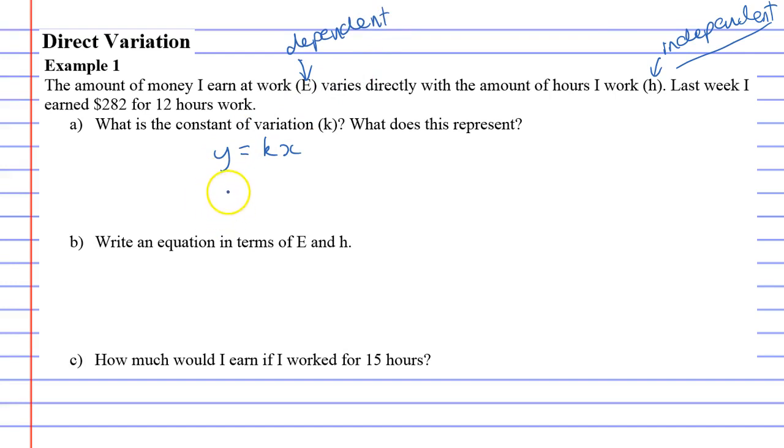So that means that E is Y, since Y is your dependent variable. And X is H, since H is your independent variable. So this is our formula.